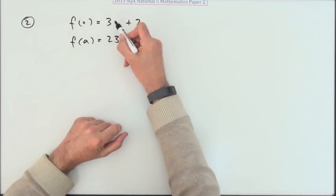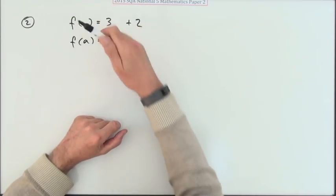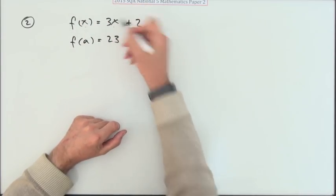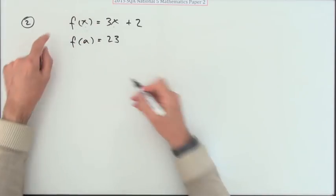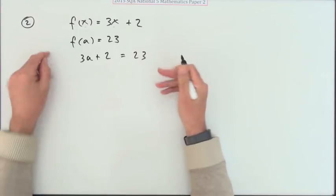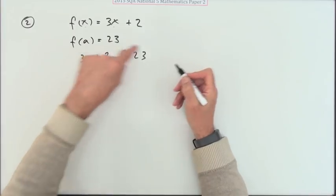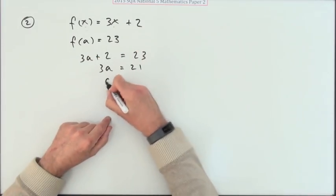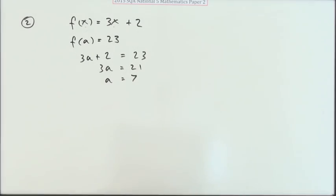Whatever you put in there appears here as three times it. It just happens that x is quite a handy thing to use for an example. So if you feed it an a, it will do three times that a, add on two, and give you the answer 23. There's a wee equation to solve. It's only two marks, I won't need to spell out all the stages. Subtracting the two makes 21, dividing by three makes seven and you're done. Two marks.